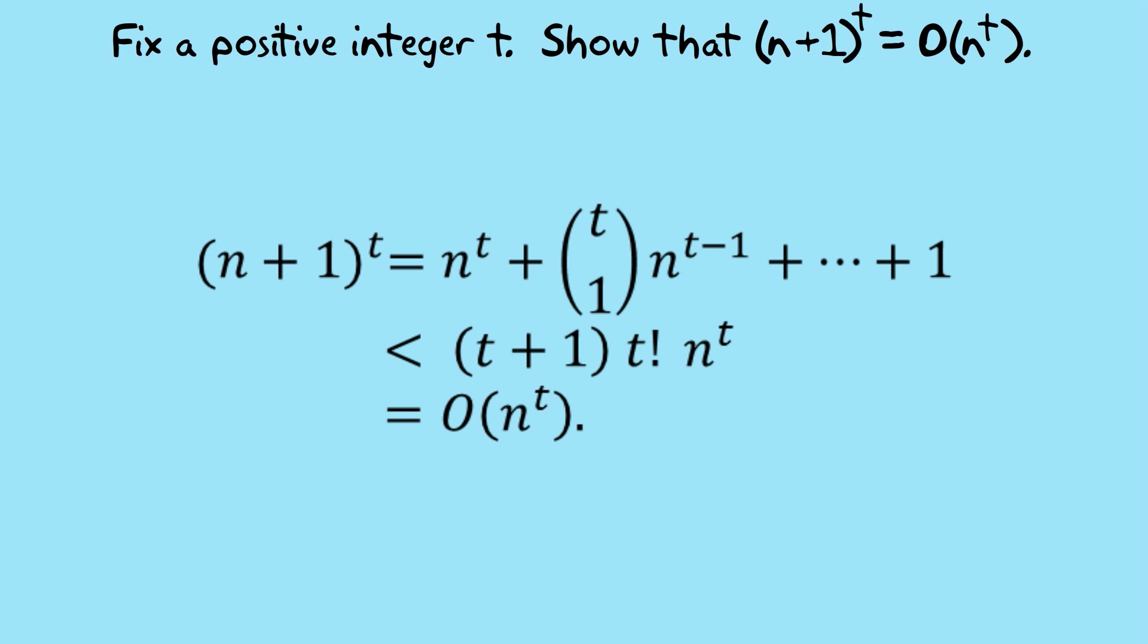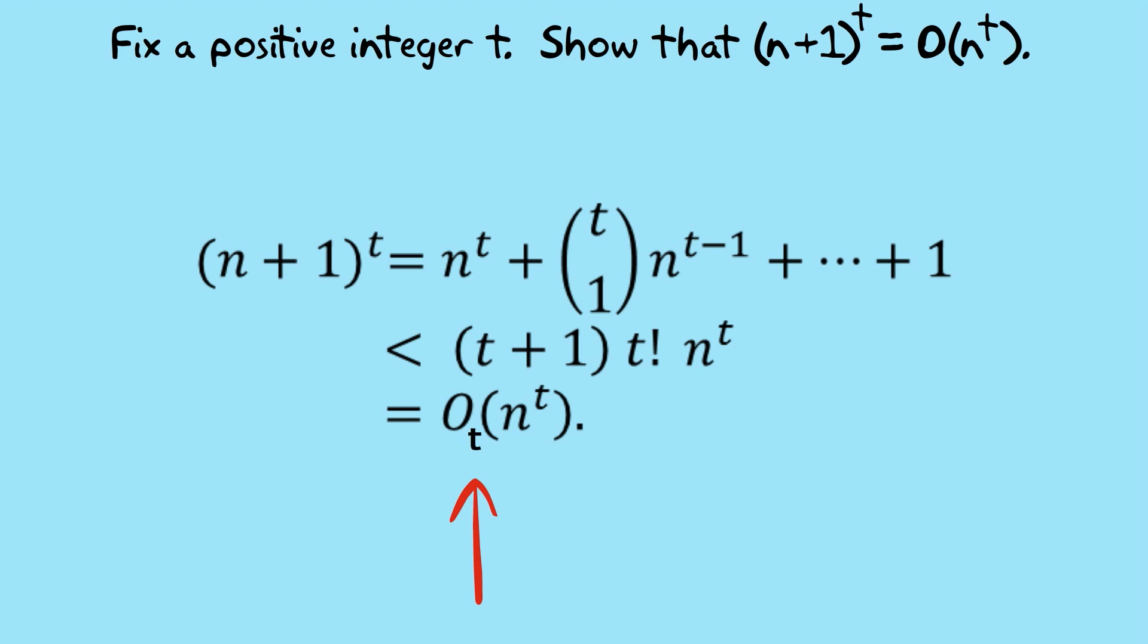There are t plus 1 terms. All of those choose terms, t choose 1, t choose 2, it's very easy to show if you express them using factorial notation, that they're all less than t factorial. And then for n greater than 1, clearly all of the n to the powers are going to be less than n to the t. And once we've got that constant, t plus 1 times t factorial, we can then just write that it equals O of n to the power of t. Sometimes we'll write afterwards where the constant depends on t. Or sometimes people will write a little t just to alert the reader to the fact that the constant in the big O likely depends on t.